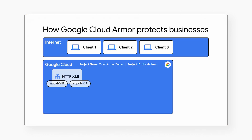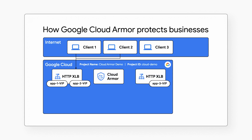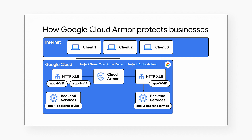Before we dive into the videos for specific topics, we need to cover the hypothetical architecture setup that we'll be using to base our demonstrations on. This is the architecture for the imaginary company we'll be protecting. It has three independent applications denoted here as App1, App2, and App3. The clients are shown connecting to these applications respectively. App1 and App2 happen to be running together on one load balancer and have different virtual IPs or VIPs and separate application backend services running.